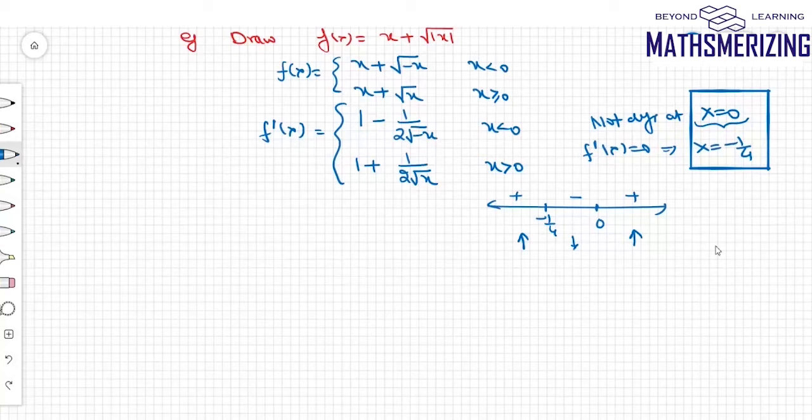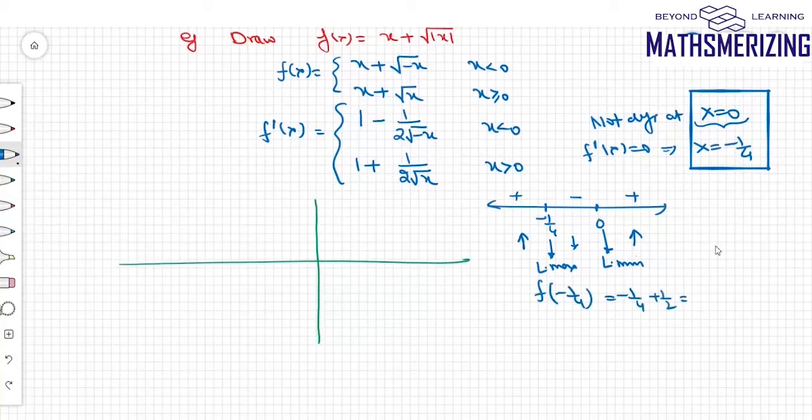At minus 1/4 it will be a point of local maximum, and 0 is a point of local minimum. The value at minus 1/4 is 1/4, and the value at 0 is 0.